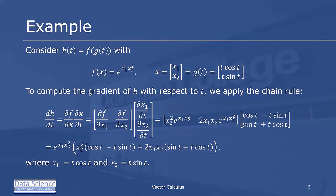So multiplying those out, we get e to the x1 x2 squared times x2 squared cos t minus t sin t plus 2x1 x2 sin t plus t cos t. And again, we want to swap out our x1 for t cos t and x2 for t sin t to finish off the problem.